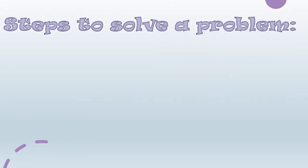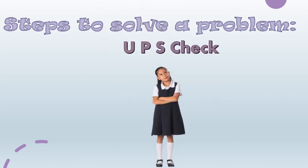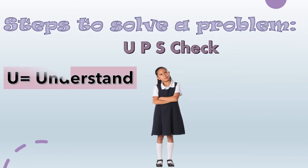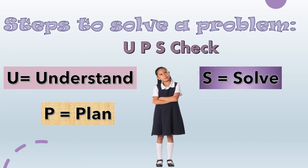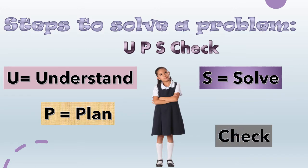Steps to solve a problem. We are going to look at the method UPSCHECK. U is for understand. P is for plan. S is for solve. And then CHECK.